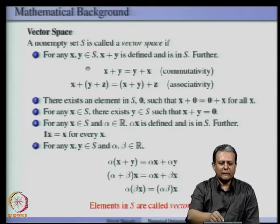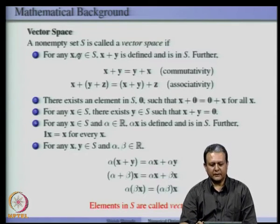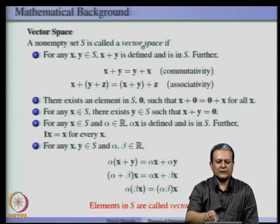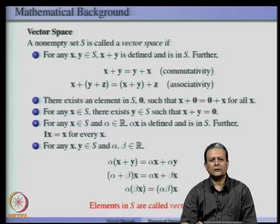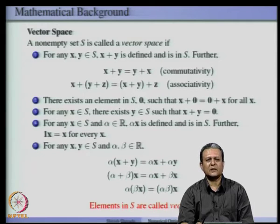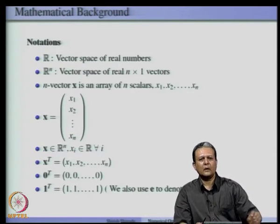The elements of the set S are called vectors. Standard examples of vector spaces include the space of real numbers ℝ, and the n-dimensional space of real numbers ℝⁿ.